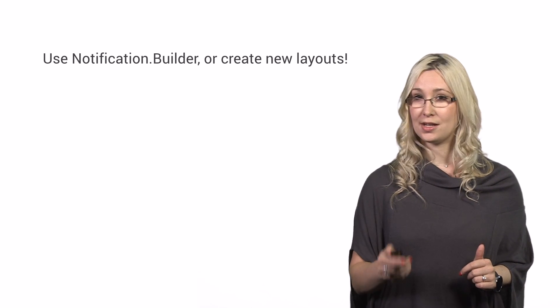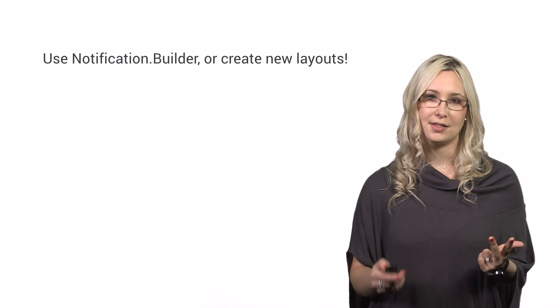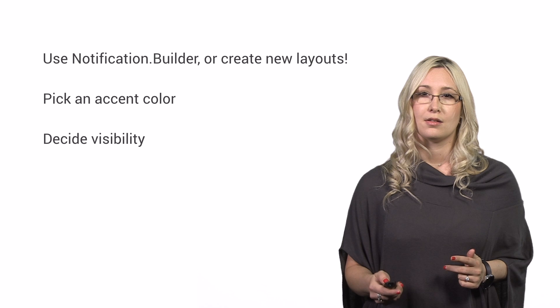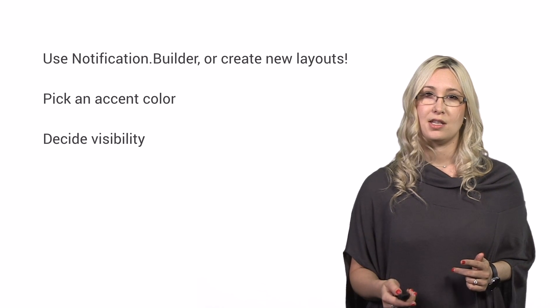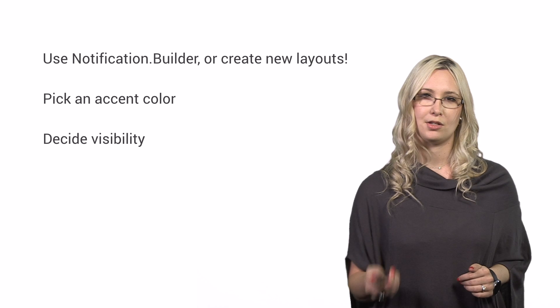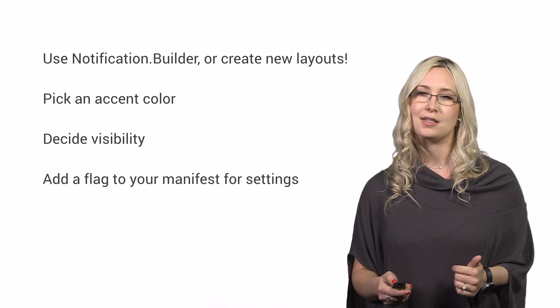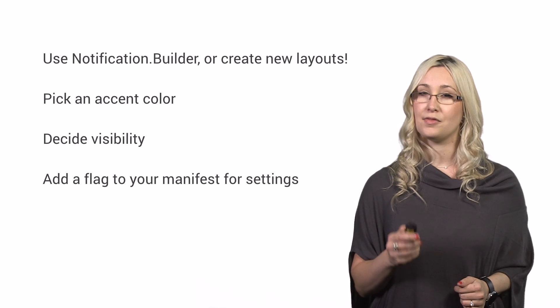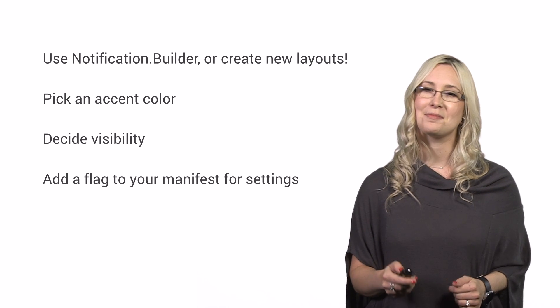So that's a lot. What should you, as an app developer, go do right now to get your notifications ready for L? Use notification.builder or create new layouts for pre and post L. Pick an accent color for your notifications because that's new. Decide what visibility you want your notifications to be, and if it's not public, then think about what you'd like to show on the lock screen. Add a flag in the manifest to get your notification settings activity listed in the system settings.